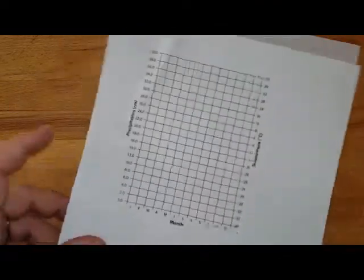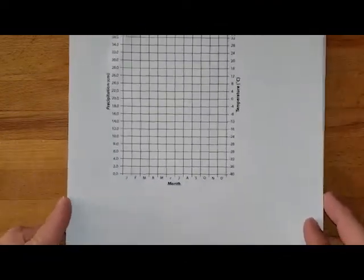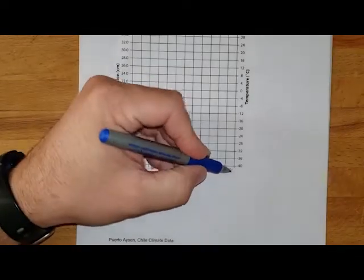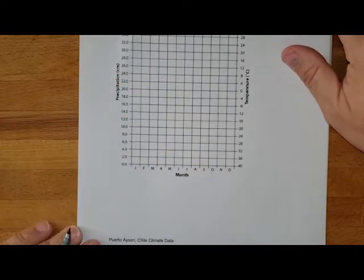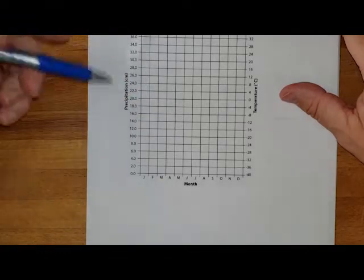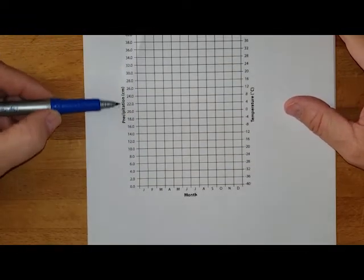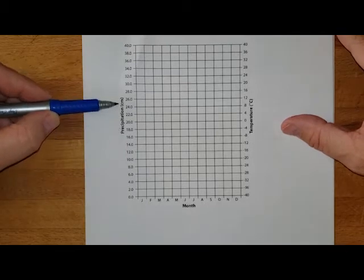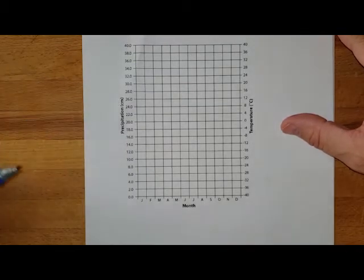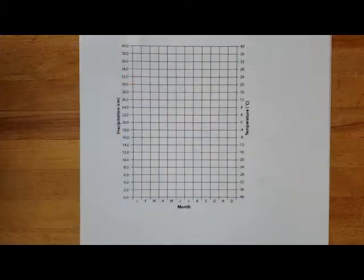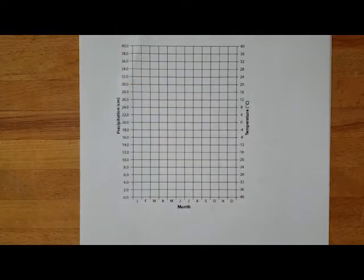This little chart right here is a climate graph and here's what we have going along the bottom. We have each of the months, so we're in January all the way over to December. On one side of this we're going to have our precipitation and that precipitation is going to be in centimeters and we're also going to have our temperature plotted on this and that's going to be in degrees Celsius.